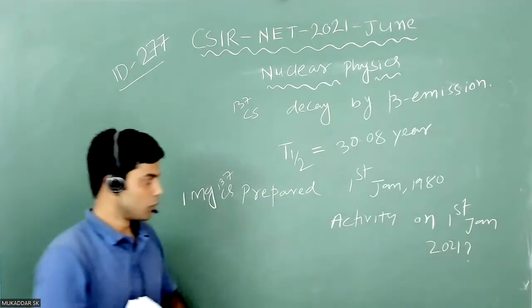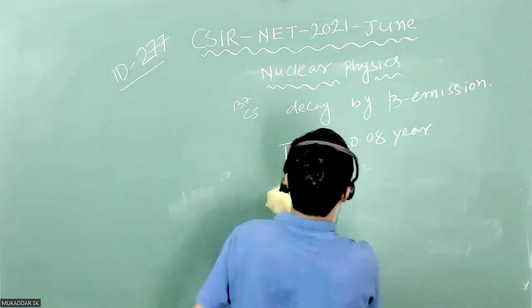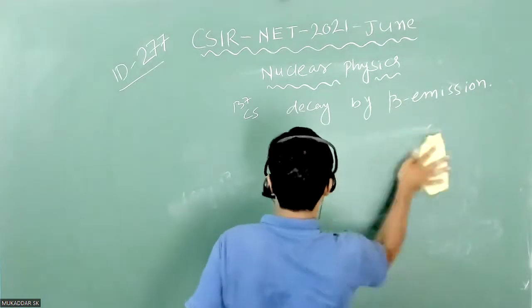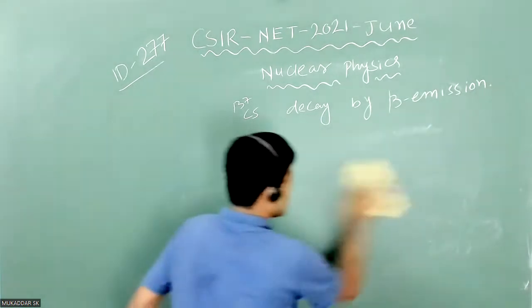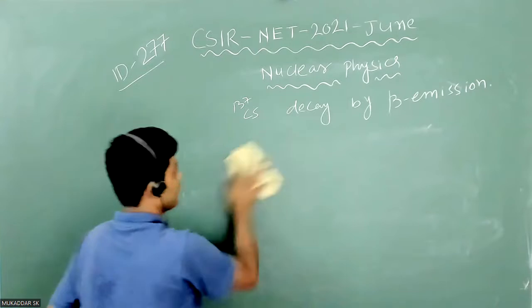We will calculate it by basic formula. For this calculation, let us calculate the initial number of atoms present in cesium.